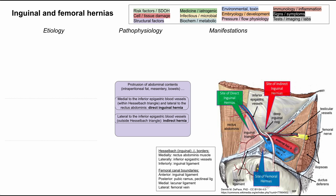Next, if they're lateral to the inferior epigastric vessels — so now we're on this side of the inferior epigastric vessels, outside of Hesselbach's triangle — it's an indirect inguinal hernia. Lastly, if they go through the femoral canal and through the femoral ring, it's a femoral hernia, as shown right here.